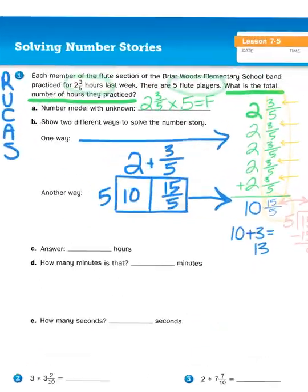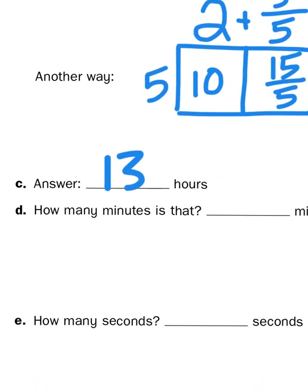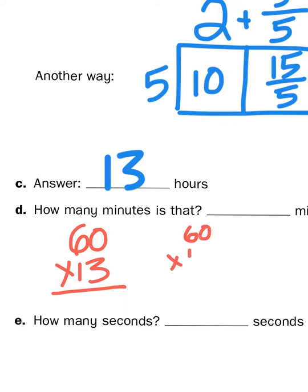Our answer is thirteen hours. But wait — there's more to this problem. They want to know how many minutes that represents. If there are sixty minutes in one hour, I need to multiply the number of hours by sixty: sixty times thirteen. I'll approach this partial product style. Sixty times thirteen is sixty times ten plus sixty times three.